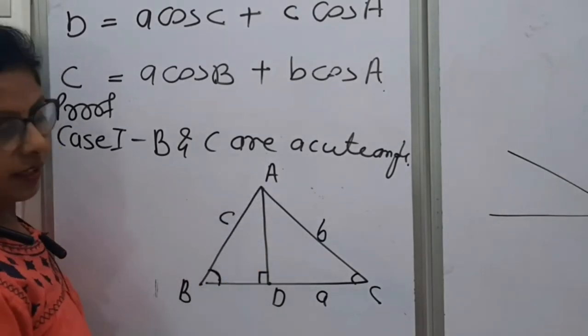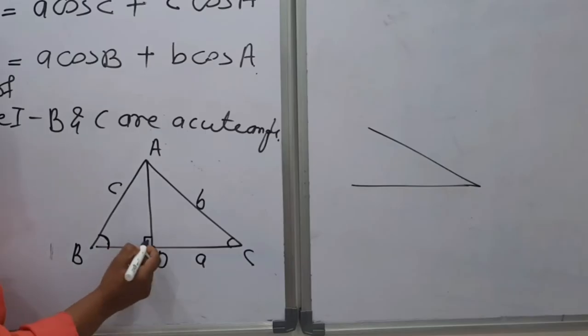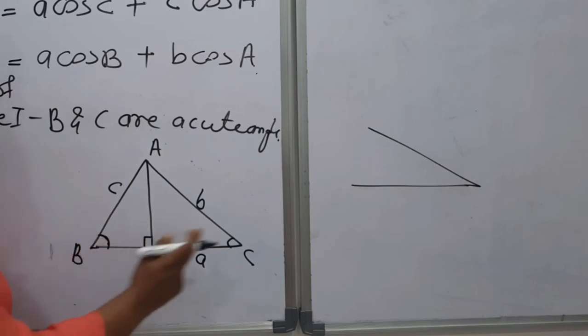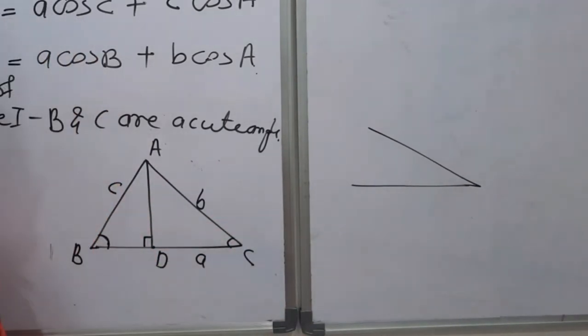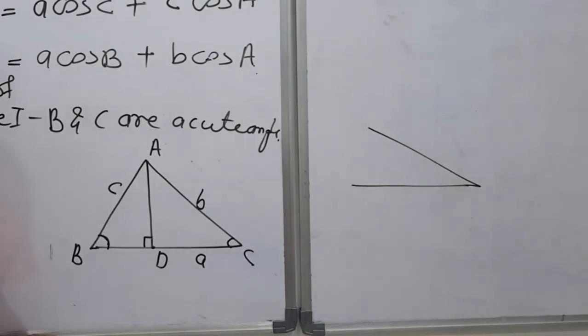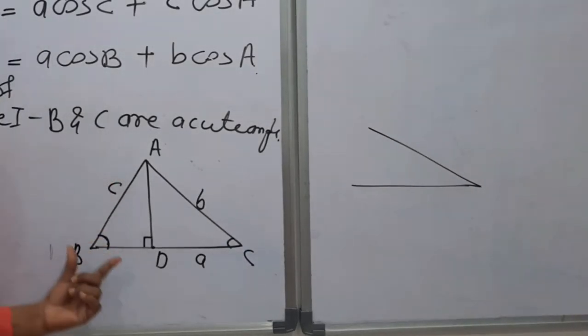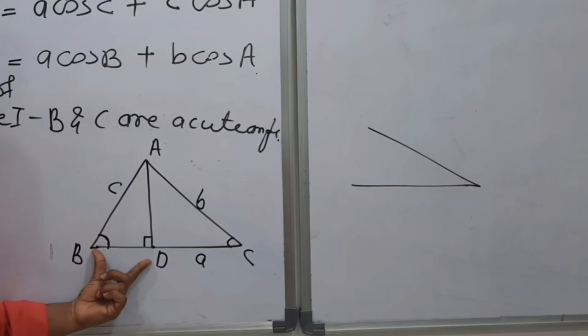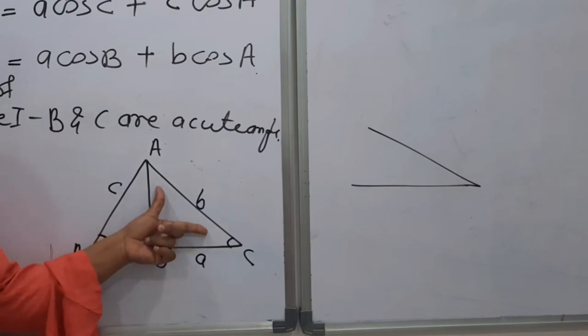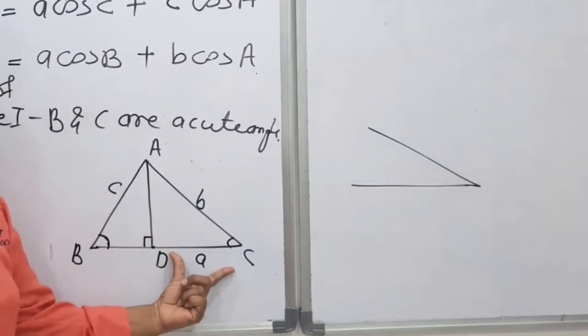Now this ABD is a right angle triangle. This is 90 degrees. This is an acute angle. And as per our definition of projection, now the projection of this side AB on BC is this BD. And the projection of this side AC is this DC.